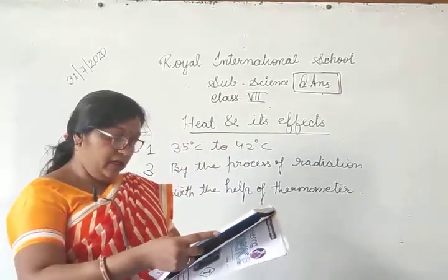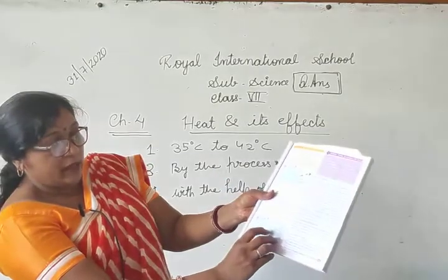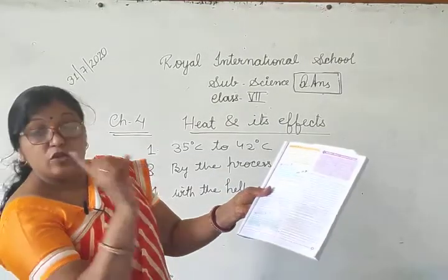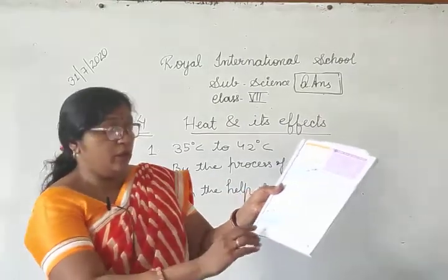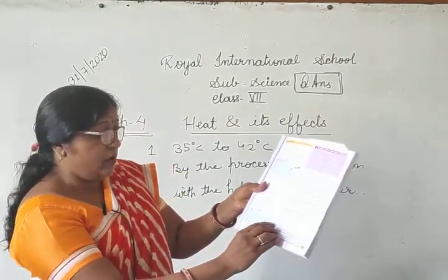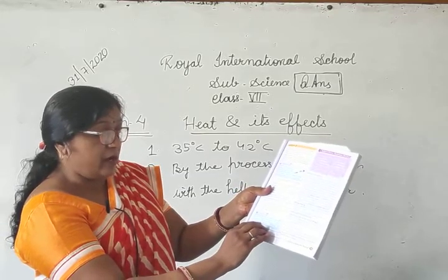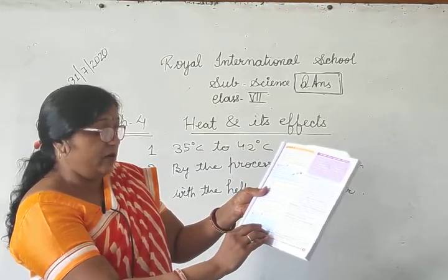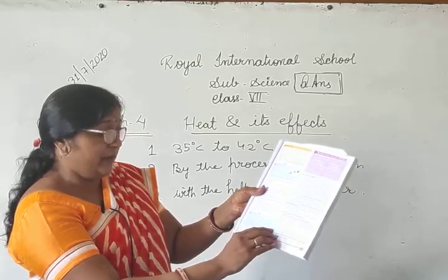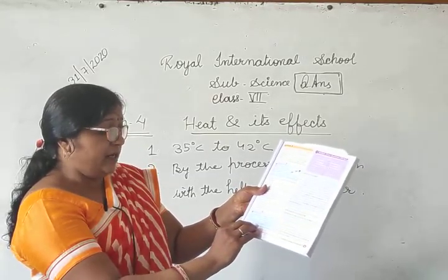Page number 35, third line — jitna mein bolti hain utna marking kariye. Alcohol thermometer cannot measure temperatures above 78 degree Celsius.